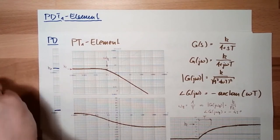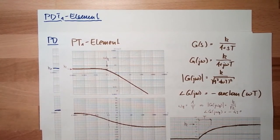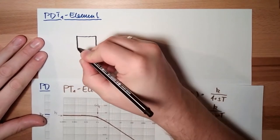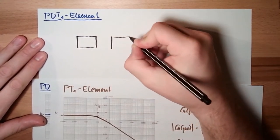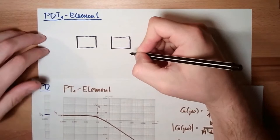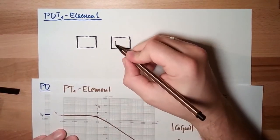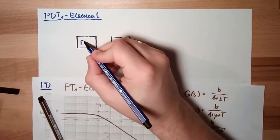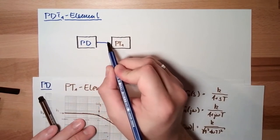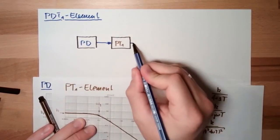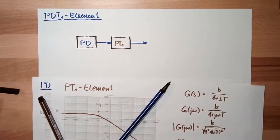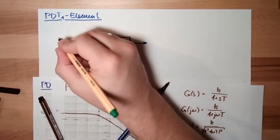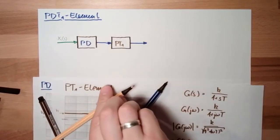If you remember how we produced the TT1 element: we used our first element, then we had the second element, and they were in series. The second element was the PT1 element. The first element was the PD element. And now it's the PD element again. Here is the output, and here is the input — Xi(s) and Xo(s).